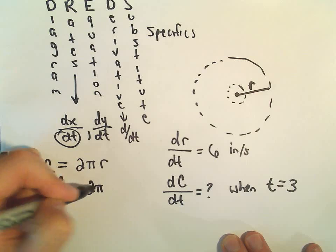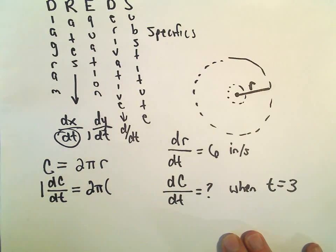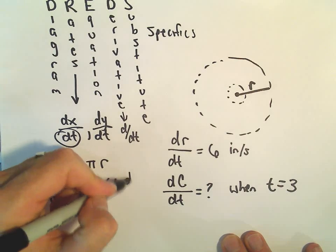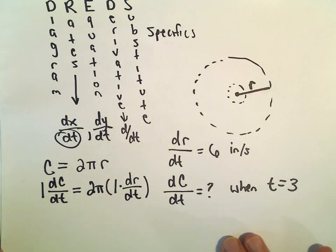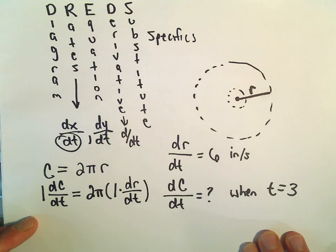2π, that's just a constant. If I take the derivative of r, I'll get 1 times dr/dt. And now I'm just going to substitute all the specific information.